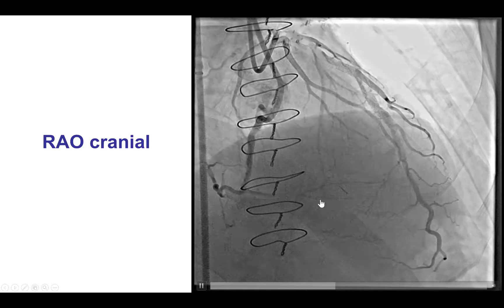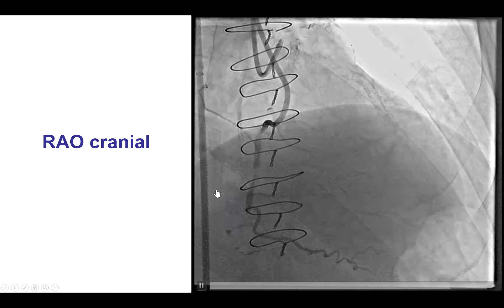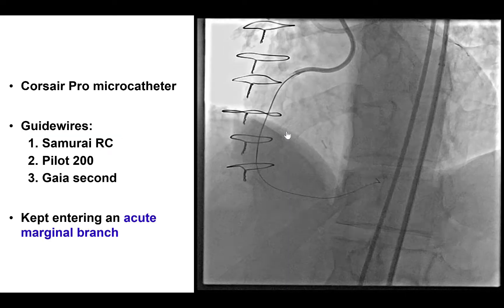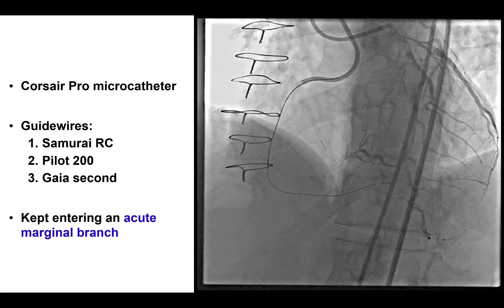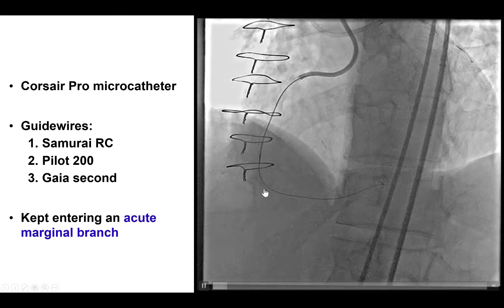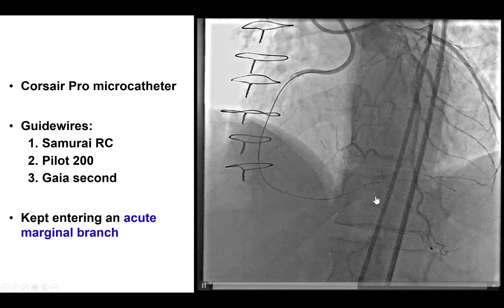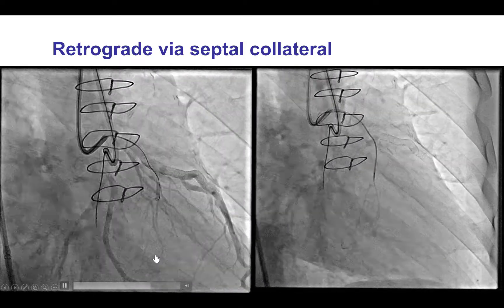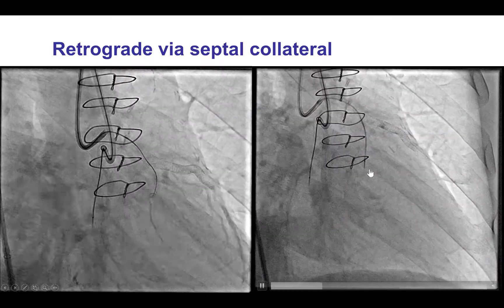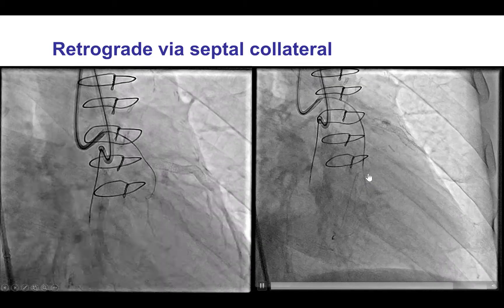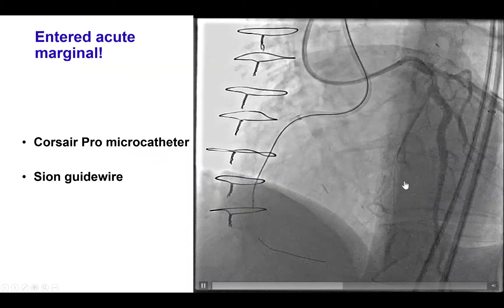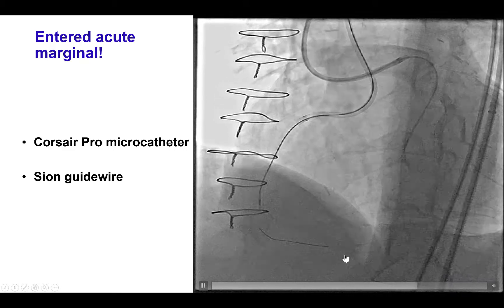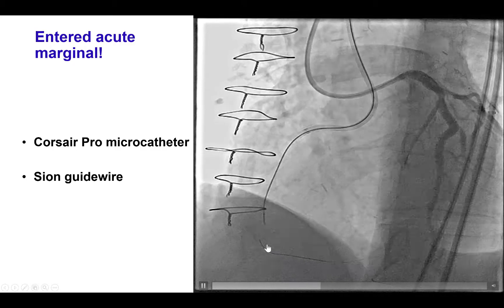We did different views to demonstrate the collaterals — some septals going to the PDA and some epicardials going to the right posterolateral. We initially did antegrade wire escalation, trying various guide wires through a Corsair Pro microcatheter. Unfortunately, the guide wires, including a Pilot 200 and a Gaia 2nd, kept entering into an acute marginal branch located inside the occluded segment. After multiple attempts and inability to redirect the guide wires, we decided to attempt retrograde crossing.